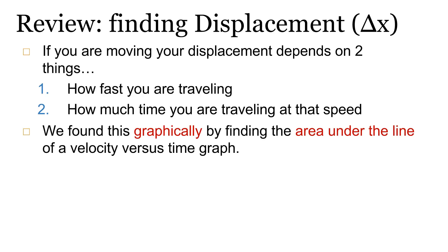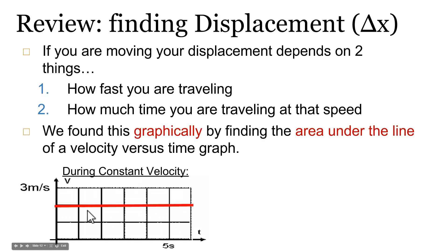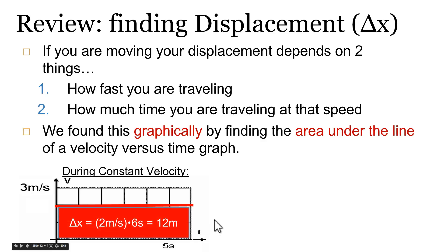Let's think about it graphically. Under constant velocity, if something is moving at a constant velocity of two meters per second for a total of six seconds, we find displacement graphically by finding the area under the line in a velocity versus time graph. Shading in that area, since the displacement is the area of a rectangle, we have height times width: two meters per second times six seconds equals 12 meters. The second units cancel.